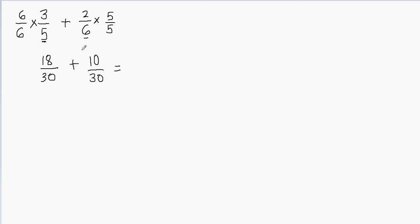We can just add the numerators. When adding or subtracting fractions, you only add or subtract the numerators — you never change your denominators. The denominator will still remain the same, so our denominator will be 30. The numerators we'll just add: since we have a plus sign in between, 18 plus 10 is going to be 28. So my answer will be 28 over 30.